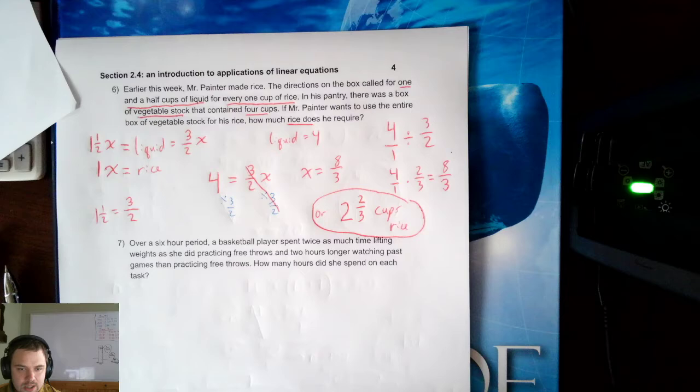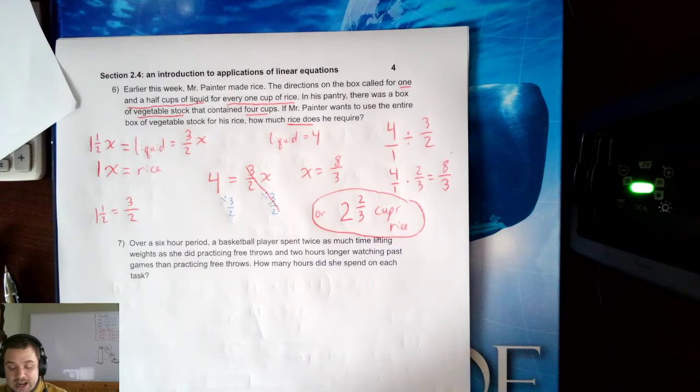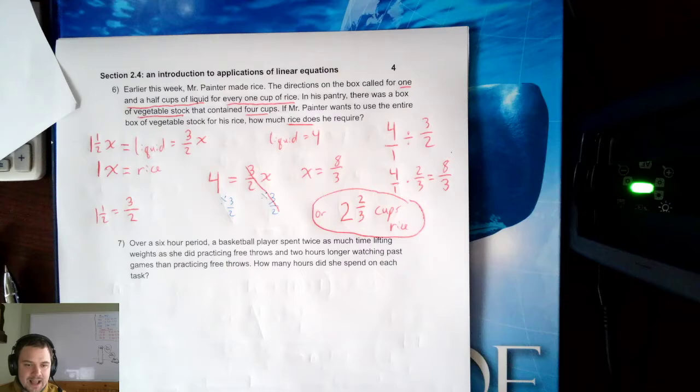Notice that one was a little bit different. We had a relationship that we needed to address, rice to liquid, and then we used the known value of liquid to find the unknown value of the rice.